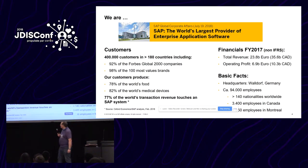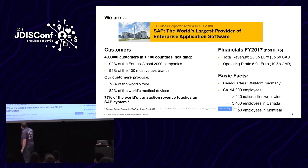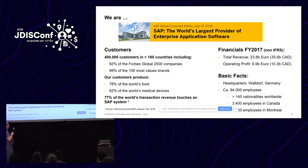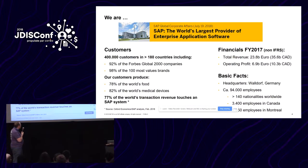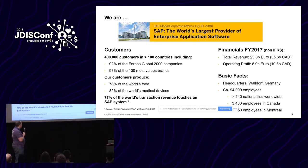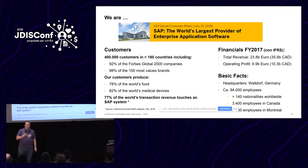We are the world leader in enterprise applications, and here you can see some numbers giving you an idea about the size of the company — like 400,000 customers worldwide. Most of the big companies run SAP to some extent, and we are so far embedded in the business world that basically 77% of the world's transaction revenue touches an SAP system at some point. So if we screw up, quite a few things go down.